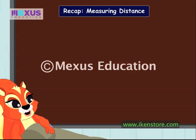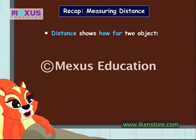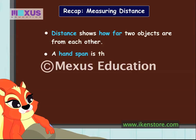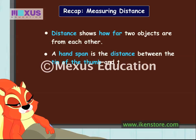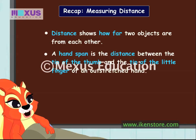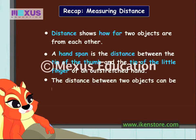I am so happy my friends came to teach me today. I feel as if I have not missed school at all. I will quickly repeat what I learnt about measuring distance. A hand span is the distance between the tip of the thumb and the tip of the little finger of an outstretched hand. The distance between two objects can be measured using fingers, hand spans and also other objects such as matchsticks.